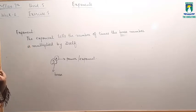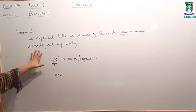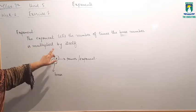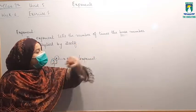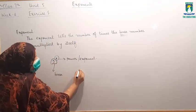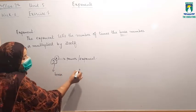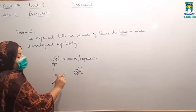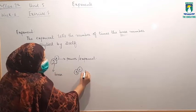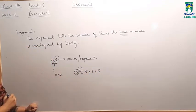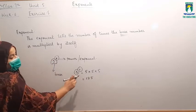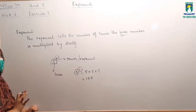Now students, the exponent tells the number of times the base number is multiplied by itself. Exponent यहाँ पर 3 है, जो tells the number of times the base number — here base is 5 — is multiplied. So exponent हमें बताता है कि कितने time base को multiply करना है. 5 raised to power 3 means 5 कितनी बार multiply होगा? 3 times. So 5 raised to power 3 equals 125: 5×5=25, 25×5=125.